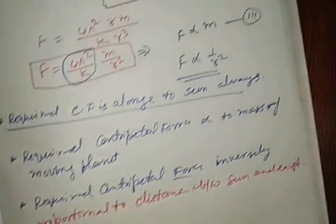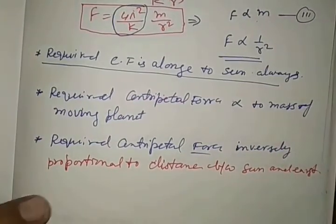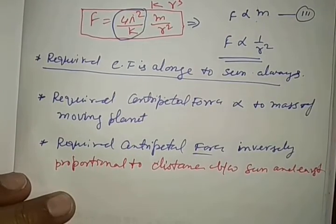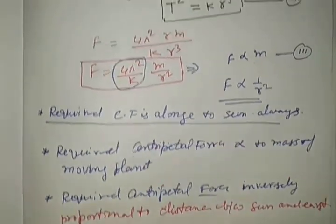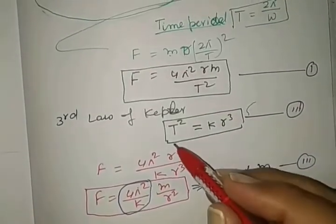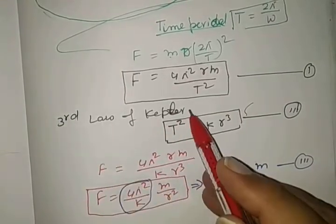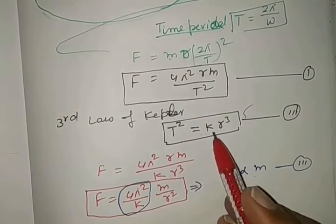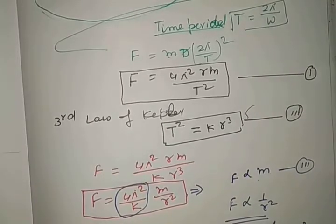So, this is called Newton's law of gravitation. And this Newton's law of gravitation is derived by third law of Kepler's, that is, T square is equal to k r cube.